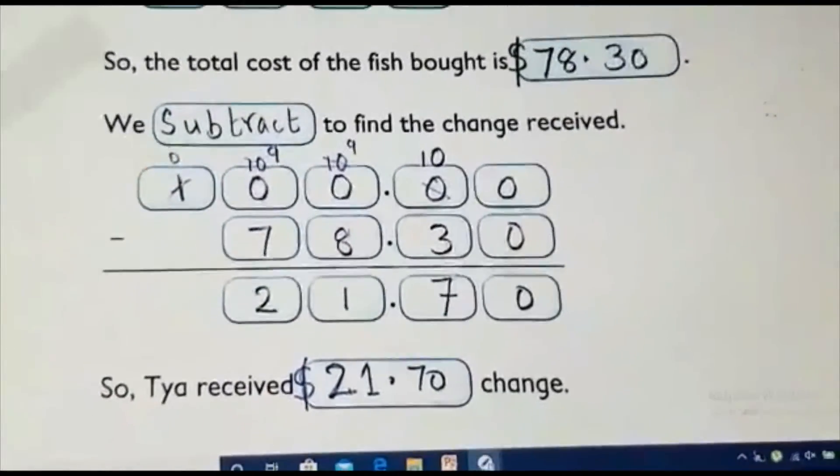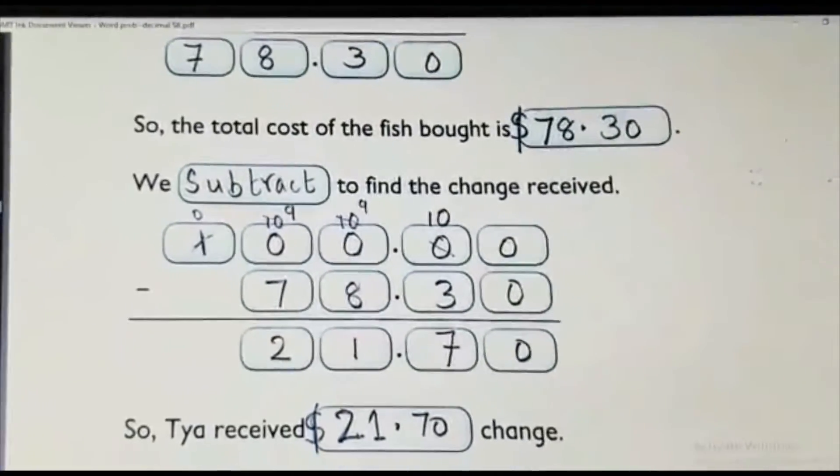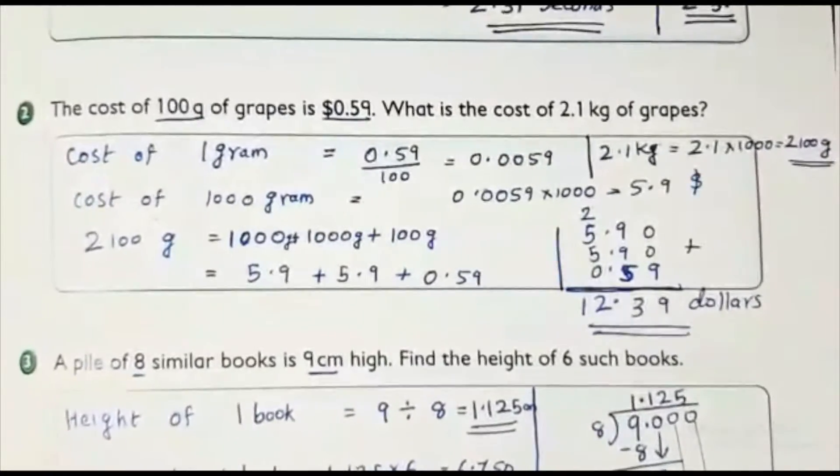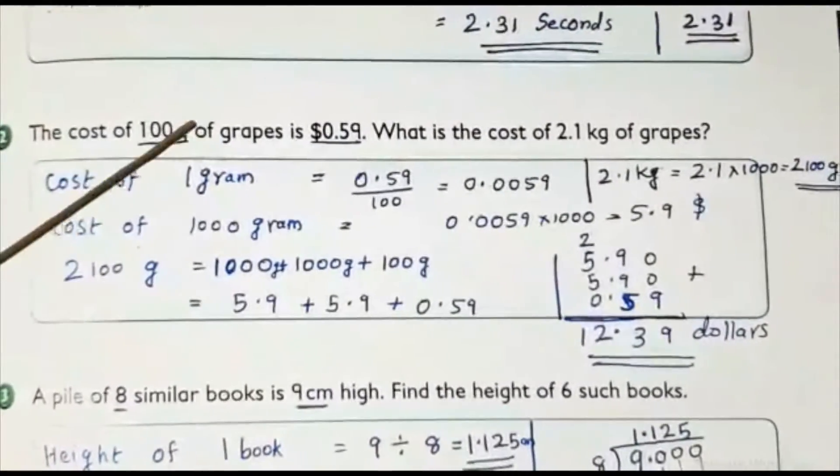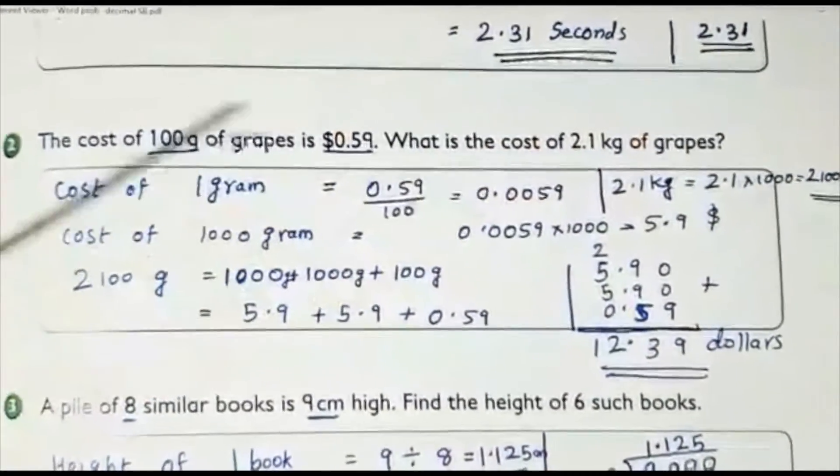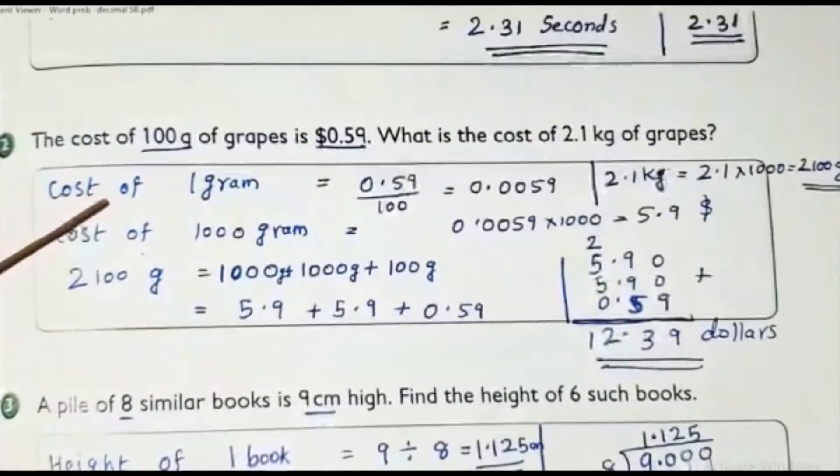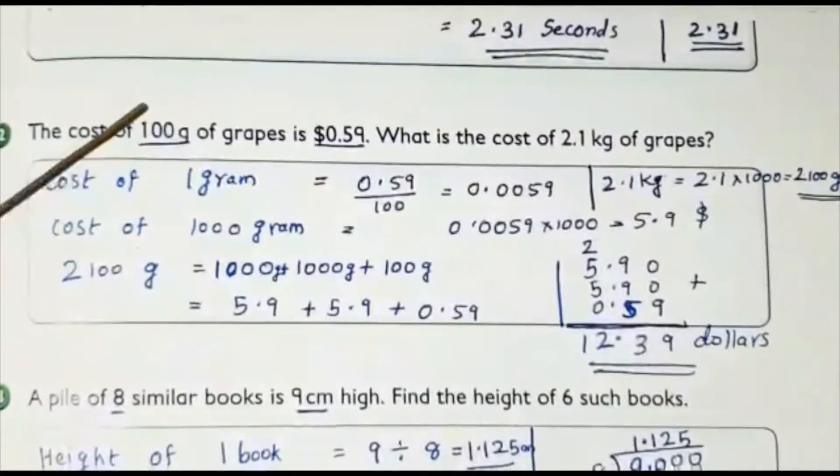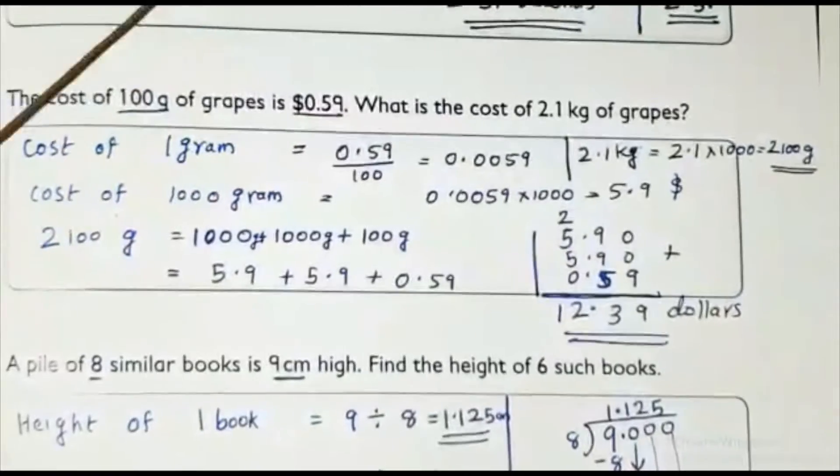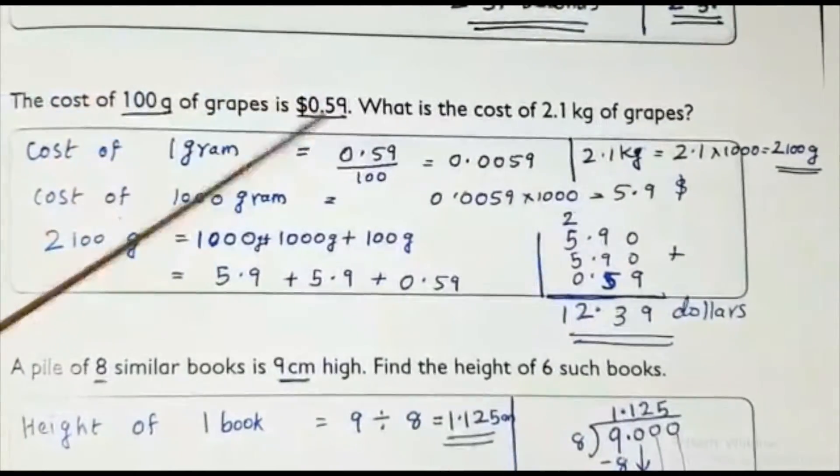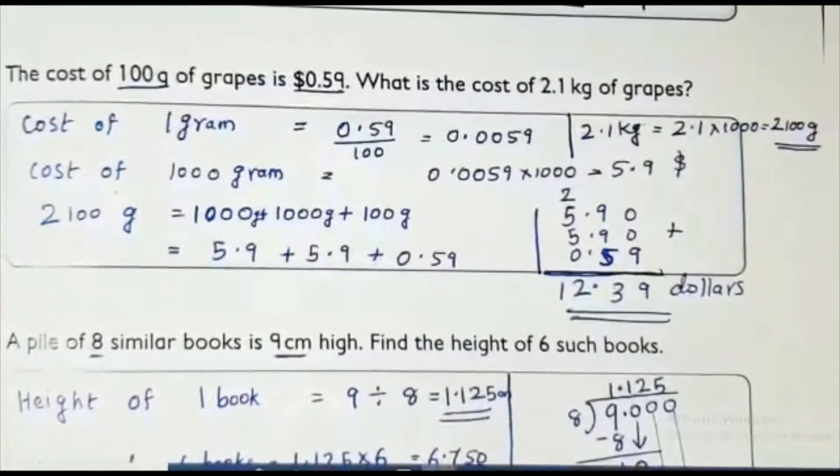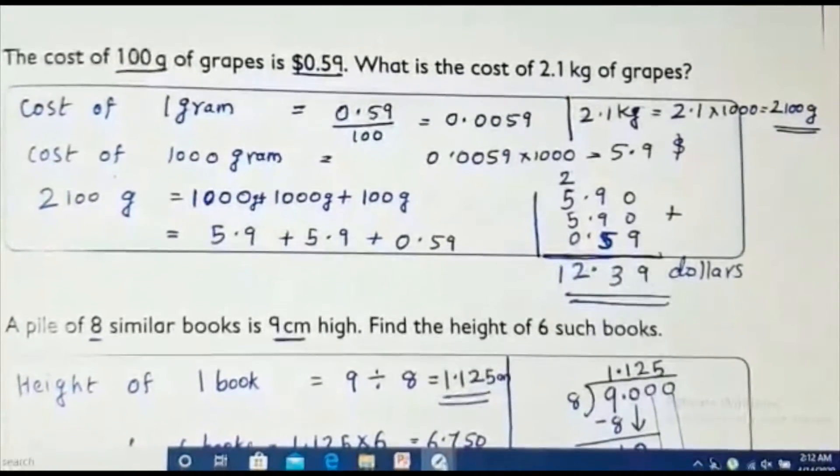Please don't check these answers first. After doing that sum only, you just come and check your answers. This is we need to read the question properly. The cost of 100 gram is 0.59. We need to find 2.1 kg of grapes cost. First I am writing. I am going to find cost of 1 gram. How I can find the cost of 1 gram? The cost of 100 gram, I know 0.59. To find the cost of 1 gram, I need to divide this cost by 100. Suppose, I am telling you the cost of 8 chocolate is 900 baisa.